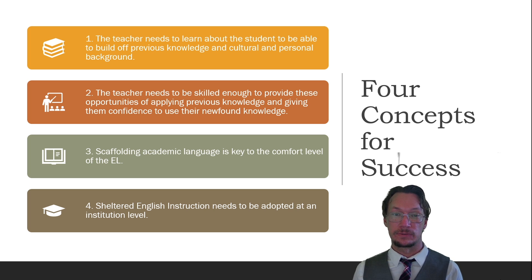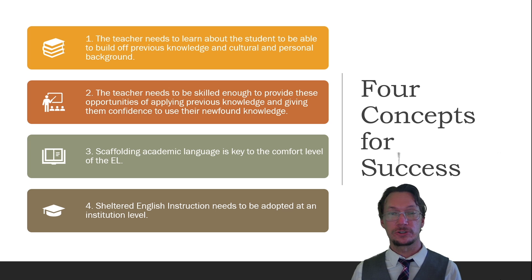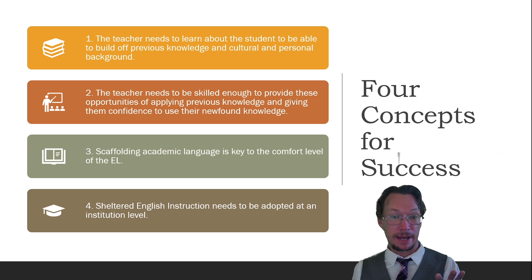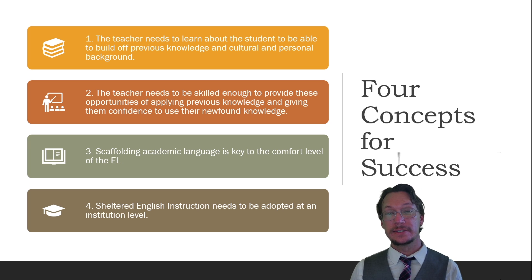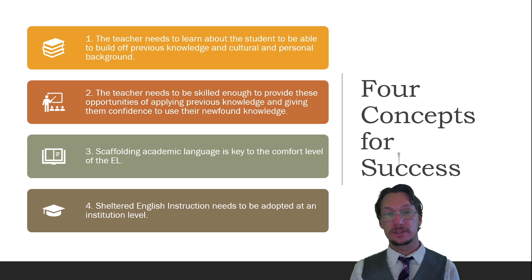There are four things that make SIOP successful. First, the teacher needs to learn about the student — their prior knowledge, cultural and personal background. Second, the teacher needs to be skilled enough to provide these opportunities and apply the student's background knowledge and cultural context to relate it to new knowledge. Third, because students are at different levels of English learning, proper scaffolding with academic language is needed for them to feel comfortable in the classroom. Fourth, SEI needs to be adopted by the entire institution — if a content-area teacher is not proficient in these first three concepts, the entire system starts to crumble.